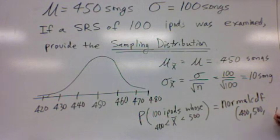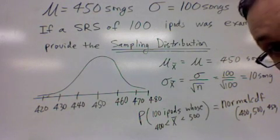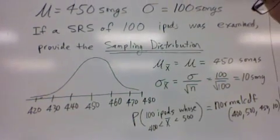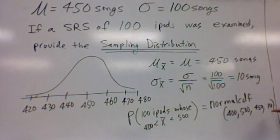And then it's missing two numbers here. We know that the average was 450 and that the standard deviation we're dealing with here is 10, since we're no longer talking about individual iPods, but collections of 100.